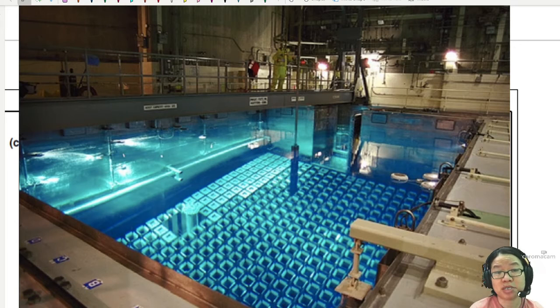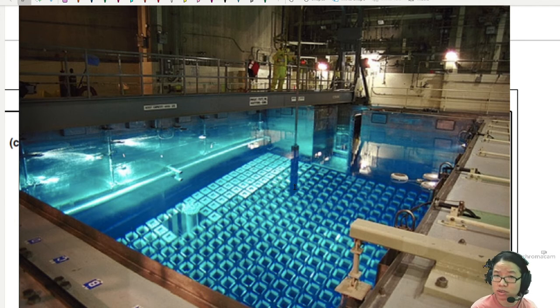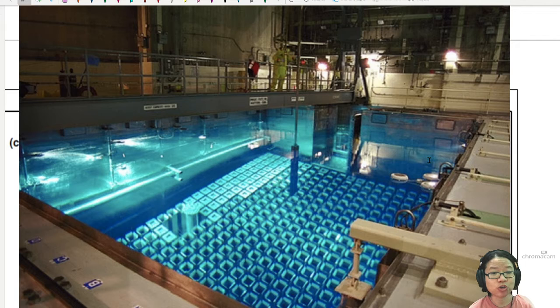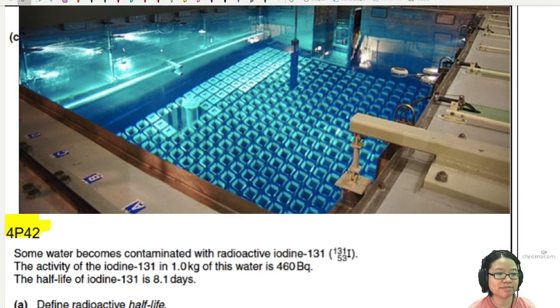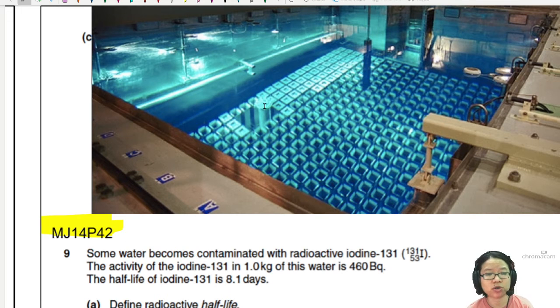Sometimes in a nuclear reactor it's no longer efficient to keep the fuel rods around and we have to replace them. This is an example of how the fuel rods can be kept safely underwater. We can also bury nuclear waste inside landfills at a certain depth. In this example from summer 2014, May June paper 42, we'll look at what happens when some water is contaminated and how long we should leave it before the water is safe to use.